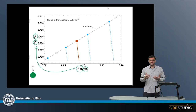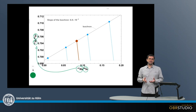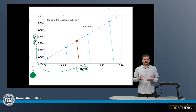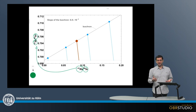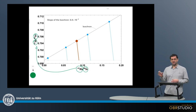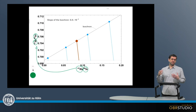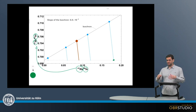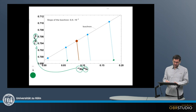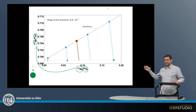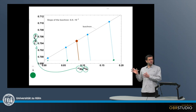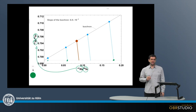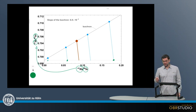To produce an isochron, we need a rock that contains components with various concentrations of the parent nuclide, or various ratios of parent to daughter — i.e., the rubidium-strontium ratio. For example, a high rubidium-strontium ratio might correspond to feldspar, and a low ratio to olivine or pyroxene. So there are components with high and low rubidium-strontium ratios.